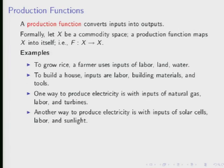Let me define what a production function is. A production function is a function that converts inputs into outputs — analogous to a utility function, which takes consumption goods and produces utility. The difference is that for a production function, we can have multiple inputs like iron, water, and coal, and produce multiple outputs. The production function maps inputs from commodity space X into outputs that also live in space X.